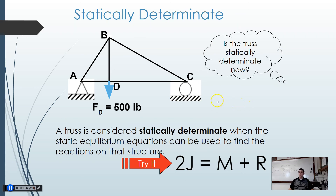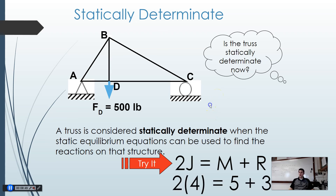We can fix this by changing one support to a roller — we need one pin and one roller. That removes one reaction, so now 5 + 3 = 8, which equals 2 times 4 joints, giving us 8 = 8. Structures need to be able to flex; too much support can actually prevent the structure from reacting to forces, putting too much strain on it.